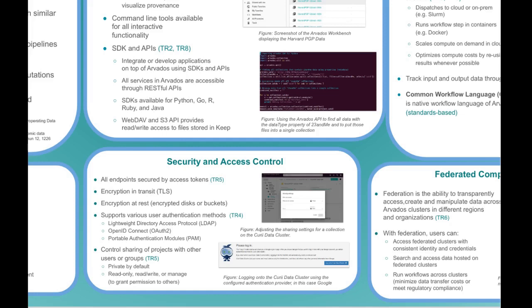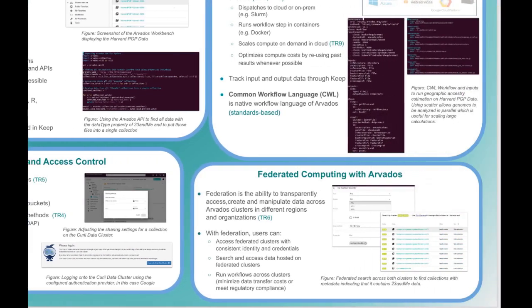All data uploaded to Arvados is private by default. Users choose what to share, who to share it with, and at what level of access it is shared. You can also configure Arvados so that users have the ability to run analysis on data sets but not download the data directly. Data Commons Technical Requirement 6 is interoperability with other trusted resources with similar security and compliance. Arvados clusters are able to communicate with other clusters in a federation, enabling interoperability between different regions or even organizations. Federation facilitates the data commons by making it possible for data to be shared widely among users in an organization or between organizations while still having controlled, audited access.